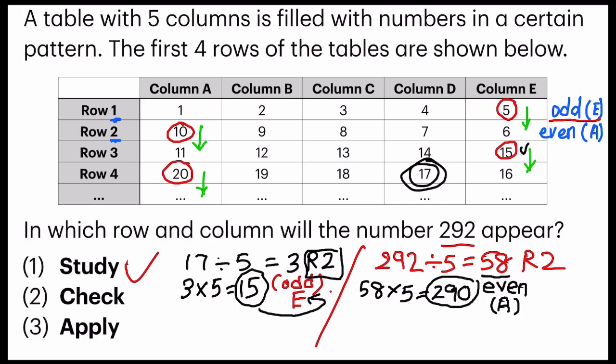So again, I always refer to what I've done before by using a smaller number. And I can always check how it runs again. So 15 is odd. 290 is even. So it's on column A. So I'm going to imagine 290 here. So 290 is there.